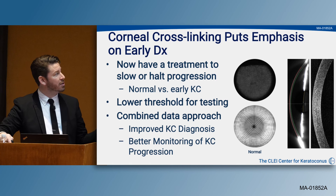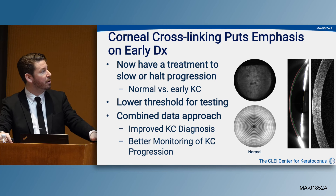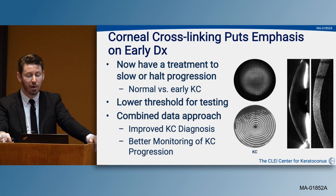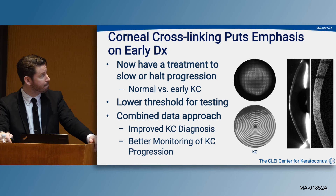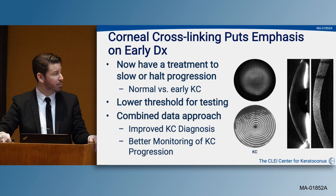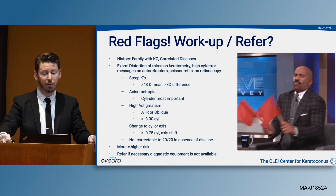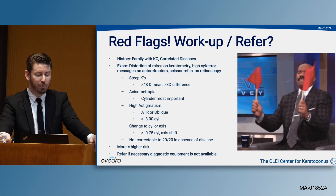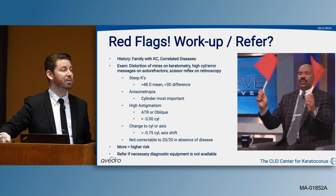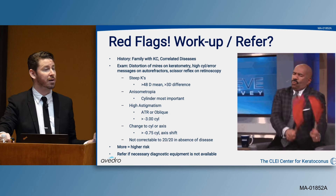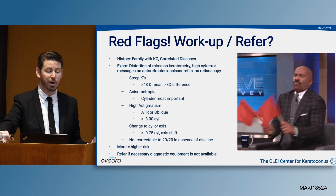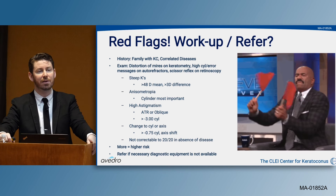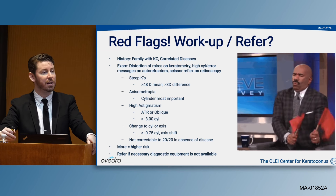Corneal collagen cross-linking puts the emphasis on early diagnosis. We really need to lower our threshold for working up these patients, use a combined data approach to diagnose earlier, and monitor for progression. In those scans you can see the irregularities shown on the Hartmann-Shack, as well as the Placido-Meyer, Scheimpflug, and OCT. When considering red flags for referral, we want to look at family history — a family history of keratoconus warrants at least a corneal topography — and any correlated disease such as atopic disease.